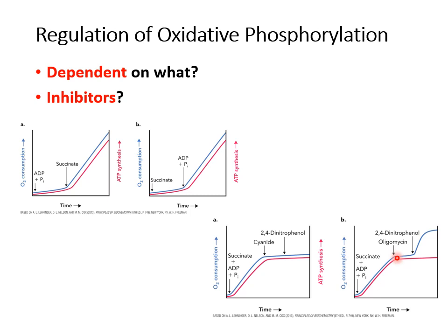Second, oligomycin — this blocks ATP synthase by blocking its proton channel. However, oligomycin binding is not irreversible. Uncouplers such as 2,4-dinitrophenol can uncouple or reverse the oligomycin binding to ATP synthase. Once the uncoupler is added, the oligomycin block is removed and oxygen consumption — reflecting oxidative phosphorylation — resumes.